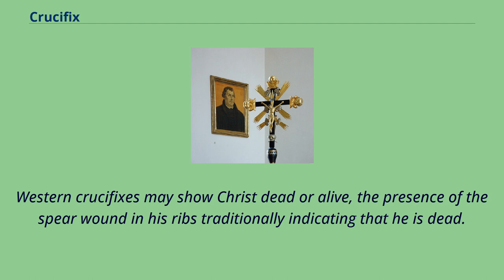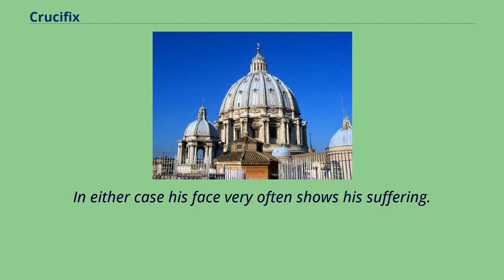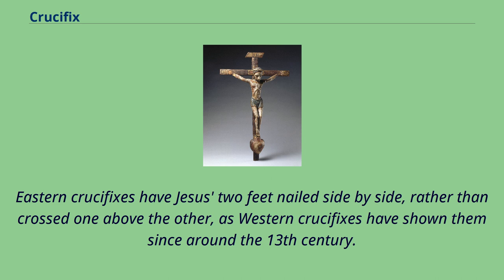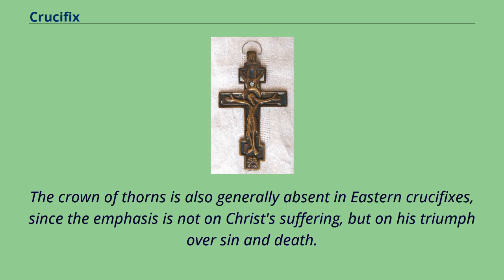Western crucifixes may show Christ dead or alive, the presence of the spear wound in his ribs traditionally indicating that he is dead. In either case his face very often shows his suffering. In Orthodoxy he has normally been shown as dead since around the end of the period of Byzantine iconoclasm. Eastern crucifixes have Jesus' two feet nailed side by side, rather than crossed one above the other, as Western crucifixes have shown them since around the 13th century. The crown of thorns is also generally absent in Eastern crucifixes, since the emphasis is not on Christ's suffering, but on his triumph over sin and death.